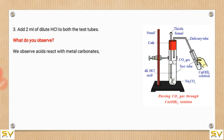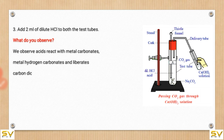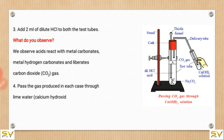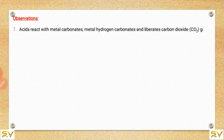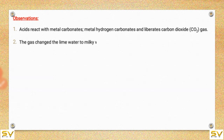When you add 2 ml of dilute HCl to both test tubes, you will observe that acids react with metal carbonates and metal hydrogen carbonates and liberate carbon dioxide gas. Pass the gas produced in each case through lime water — that is, calcium hydroxide solution — and record your observations. The gas changed the lime water to milky white when passed through it.